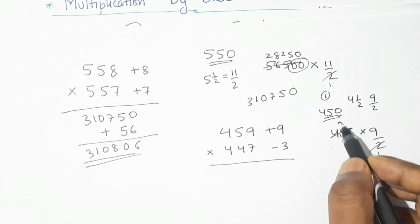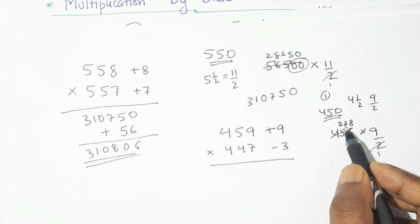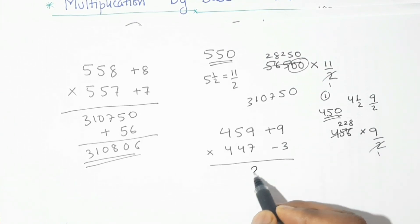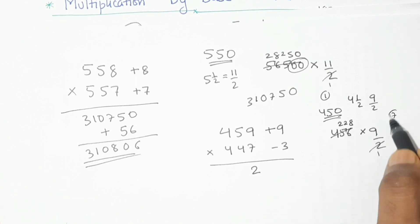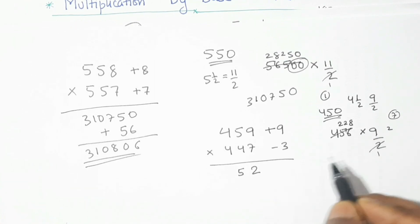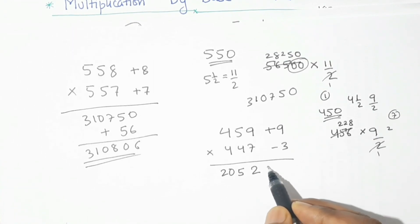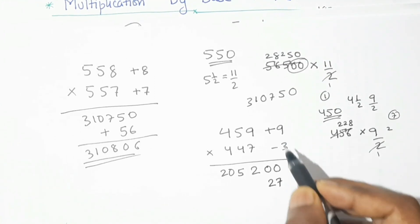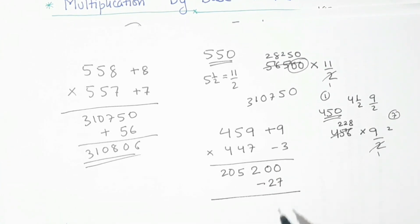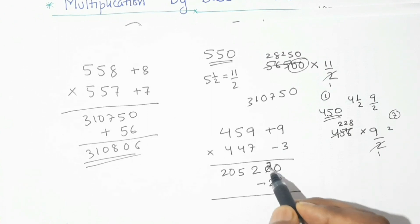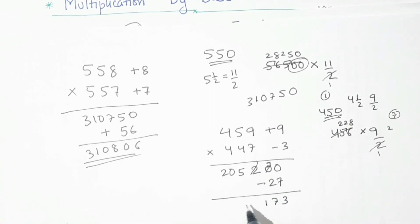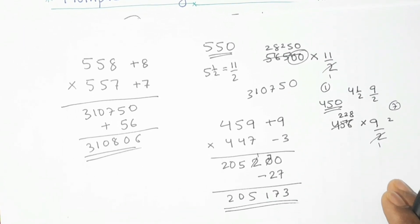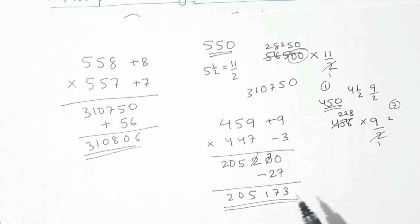Since 456 is even, we divide by 2 to get 228, then multiply by 9: 9×228 = 2052. We place two zeros, giving 205200. The deviation product is 9 × (−3) = −27; since signs are opposite, we subtract 27. Subtracting gives our product: 205173.